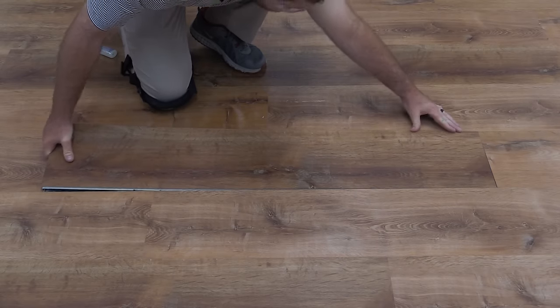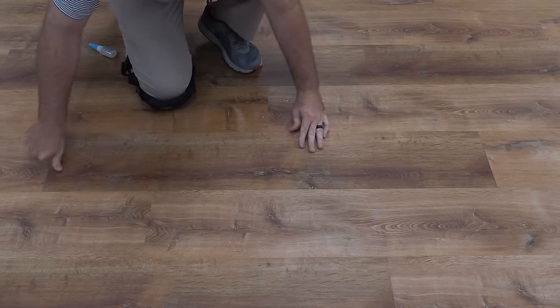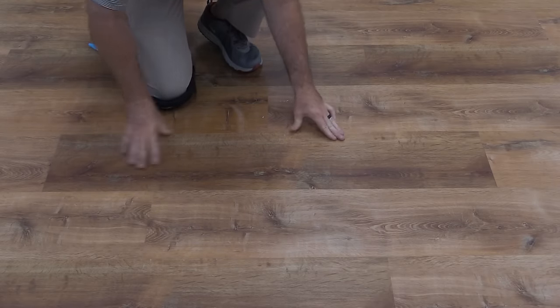Align the cut corner first, then drop the replacement plank into position. It is a good idea to practice inserting the replacement plank prior to applying glue.